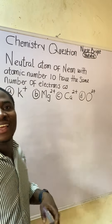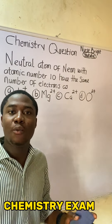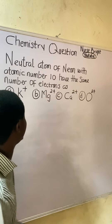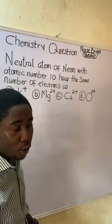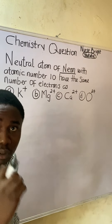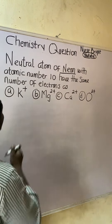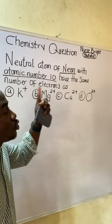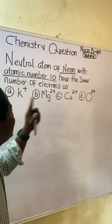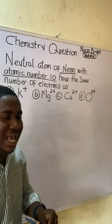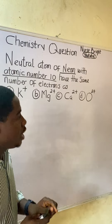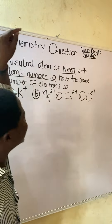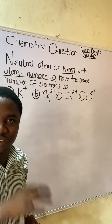You came across this question in your chemistry exam — how will you solve it? It is extremely easy. Let's solve together. The question says: neutral atom of neon, with atomic number 10. They are asking which of the given options has the same number of electrons as neon. They've given us the number of electrons of neon already.